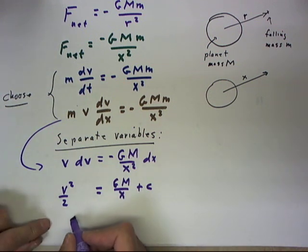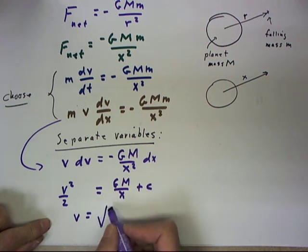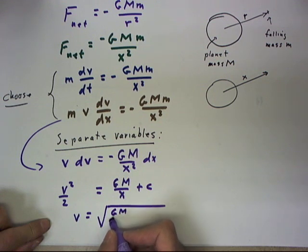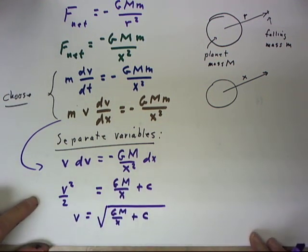Solving for V, we see that V is going to equal the square root of GM over X plus our integration constant.